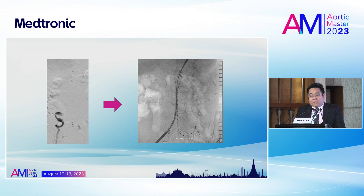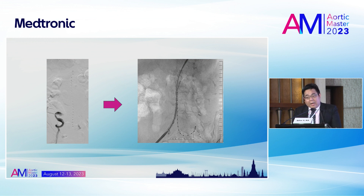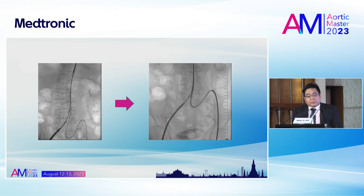Usually when you have a patient with a very, very tortuous iliac artery, in cases of mild or moderate tortuosity, when you can advance the stiff wire and the stent graft, the stent graft will straighten the iliac artery. But in cases of severe tortuosity, sometimes the stent graft will bring problems when you deploy it. In some situations, I have encountered stent kinking at the time of EVAR deployment.